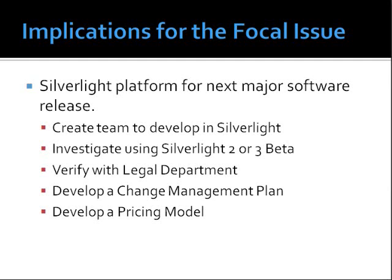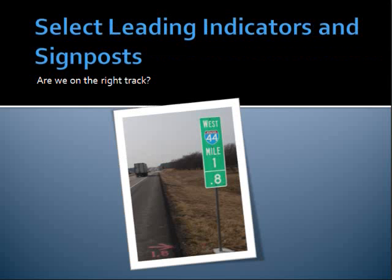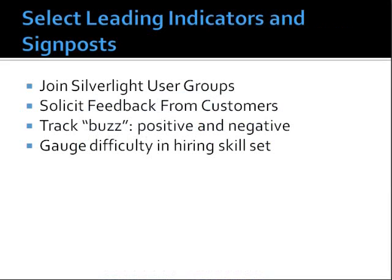Those are a few of the implications we could look at with the scenarios. Next, we want to select leading indicators and signposts — are we on the right track? First, we should subscribe to and join user groups for Silverlight to see how popularity grows or wanes. We should meet with customers and give demos for soliciting feedback. Why not create a beta testing user group with permission to try out our new software for free in exchange for feedback? Let's also task someone with tracking the buzz in the press and news groups on Silverlight, and create a survey for our customer base.